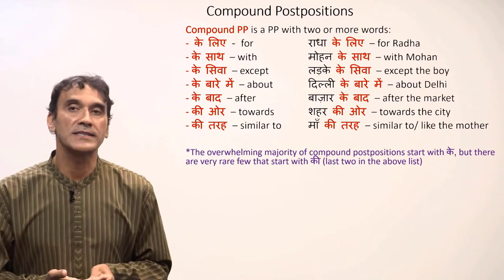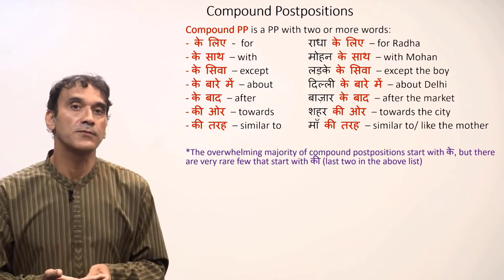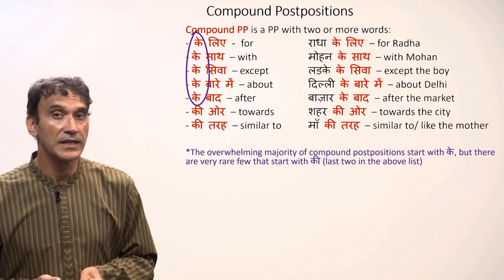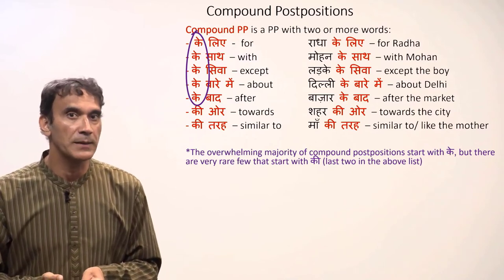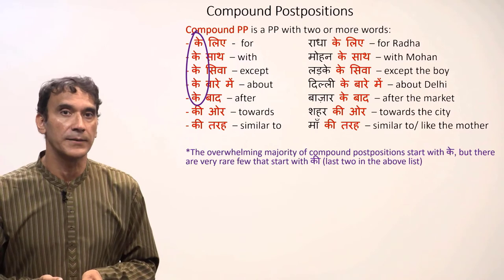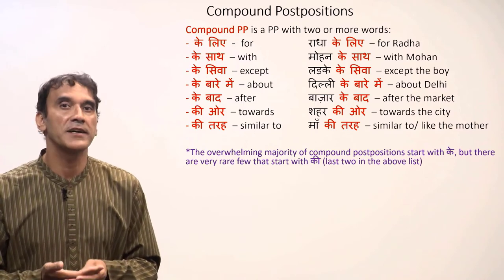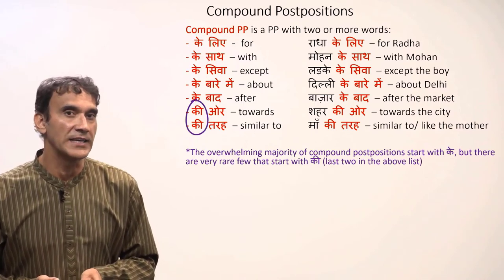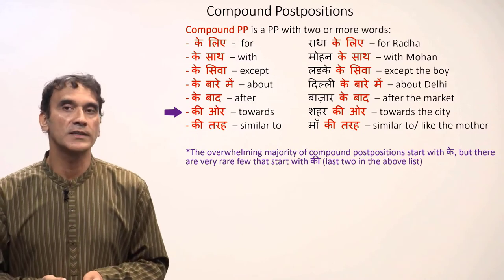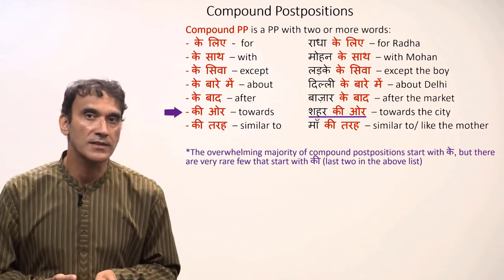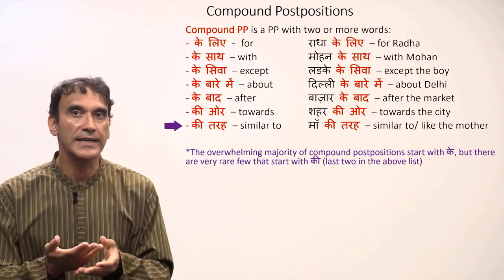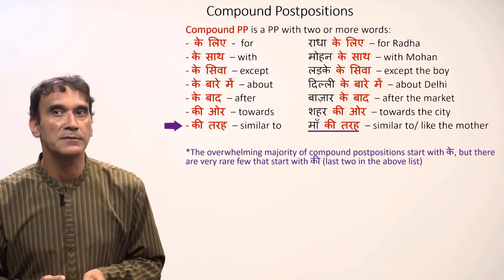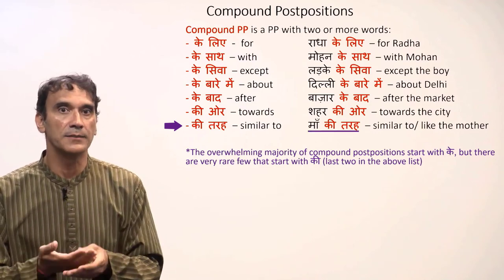In these examples, the first word of most postpositions is ke — the overwhelming majority of compound postpositions start with ke. But there are very rare few that start with ki. Ki or means 'towards' — sheher ki or means 'towards the city.' Ki tarha means 'similar to' — maa ki tarha means 'like the mother.'